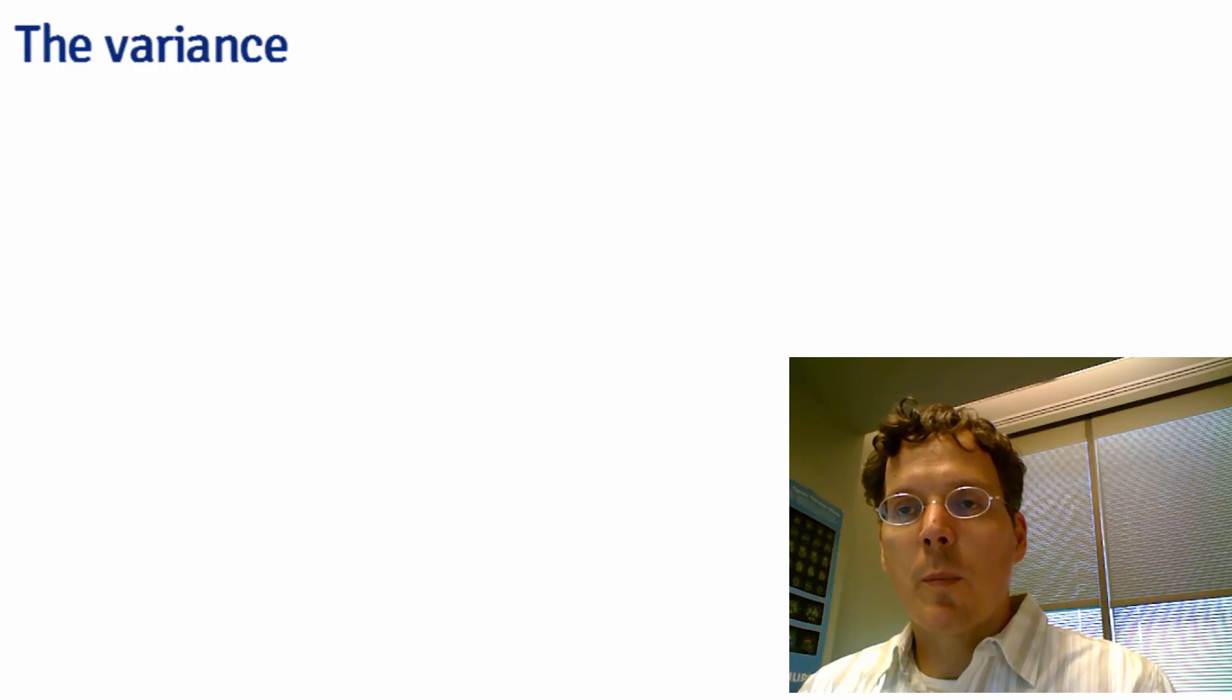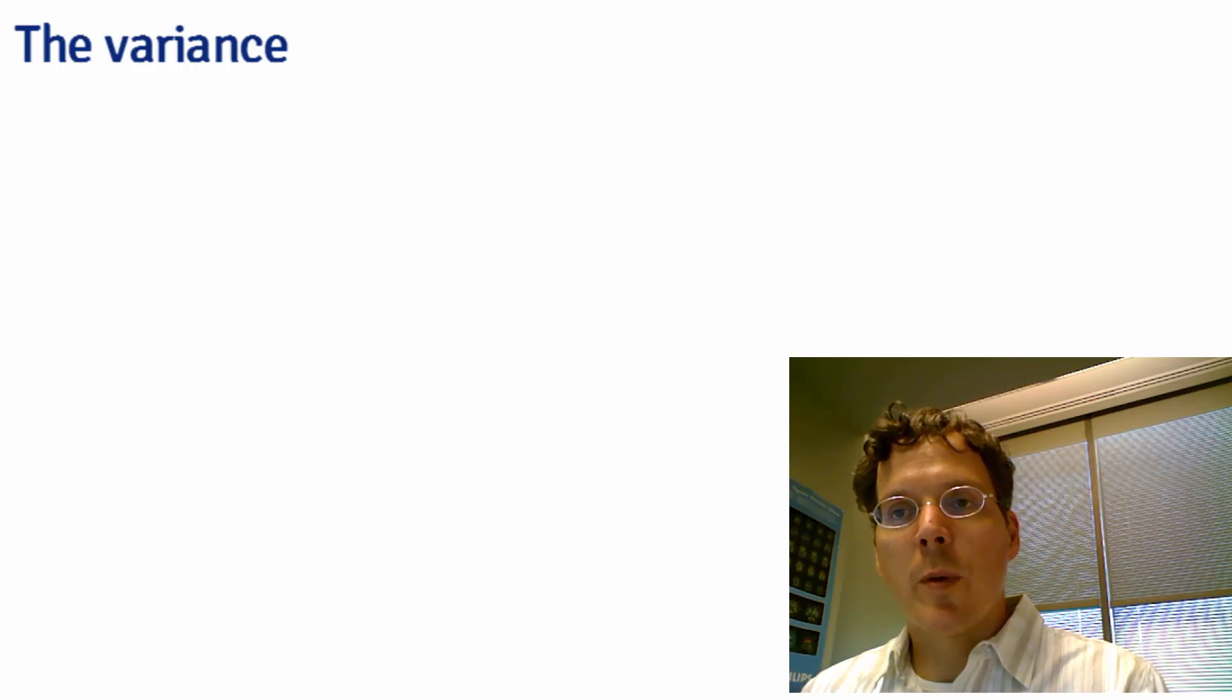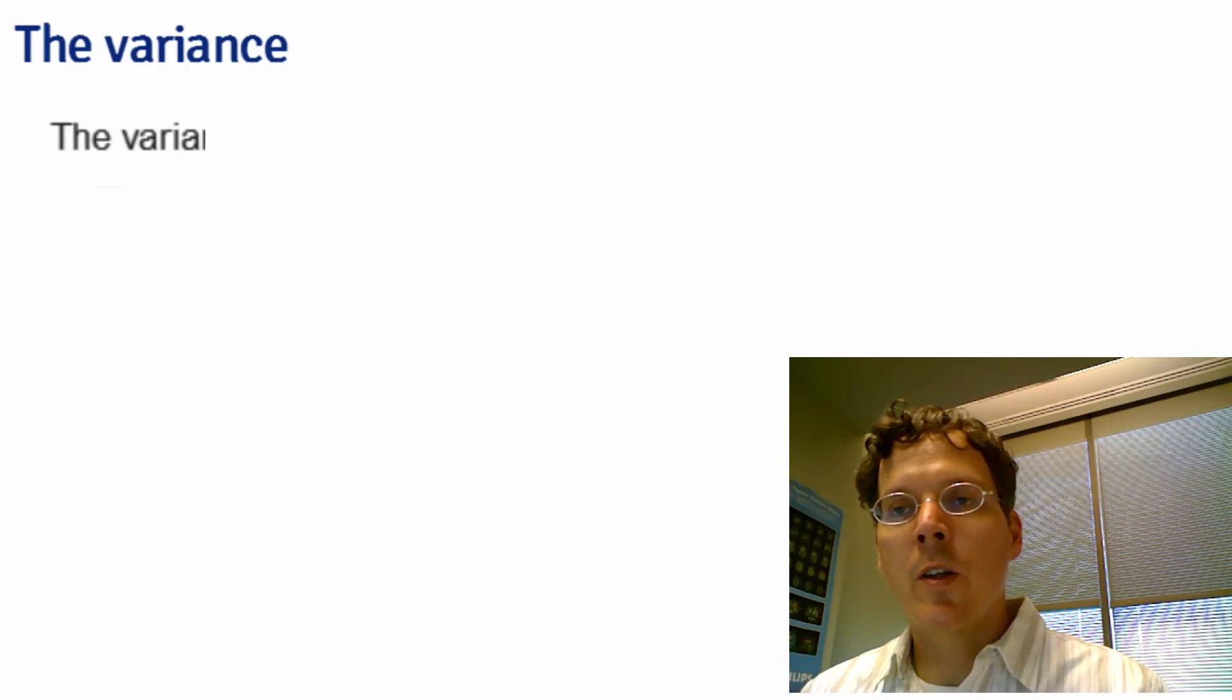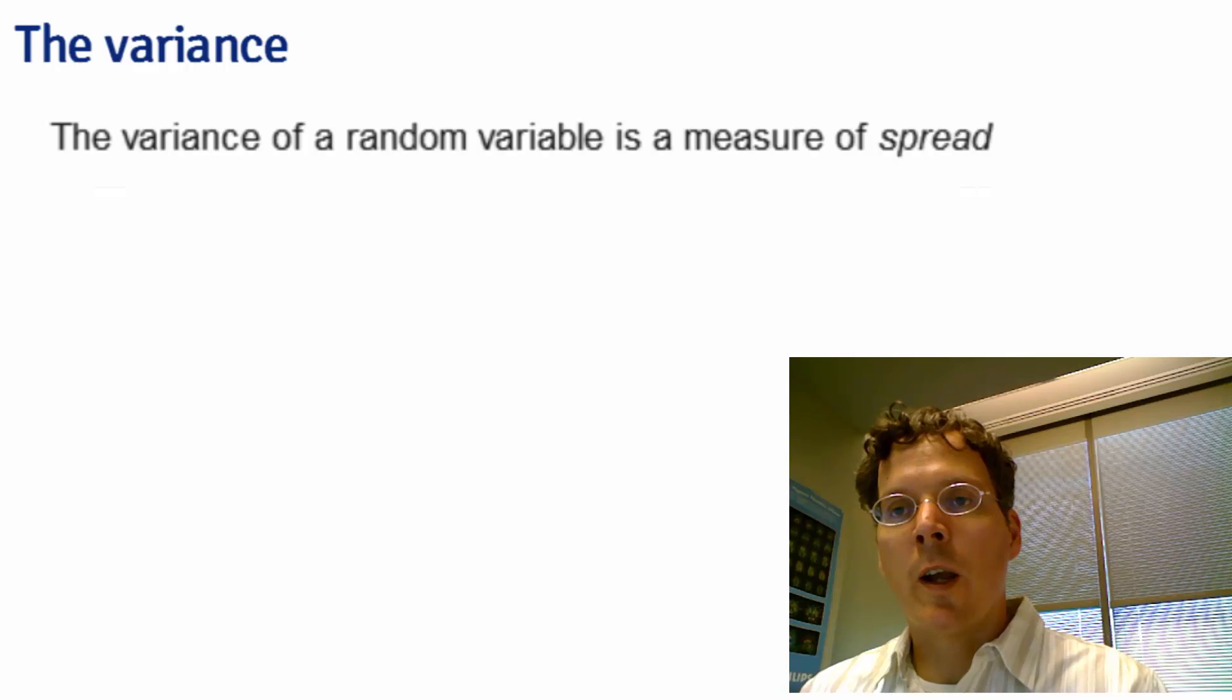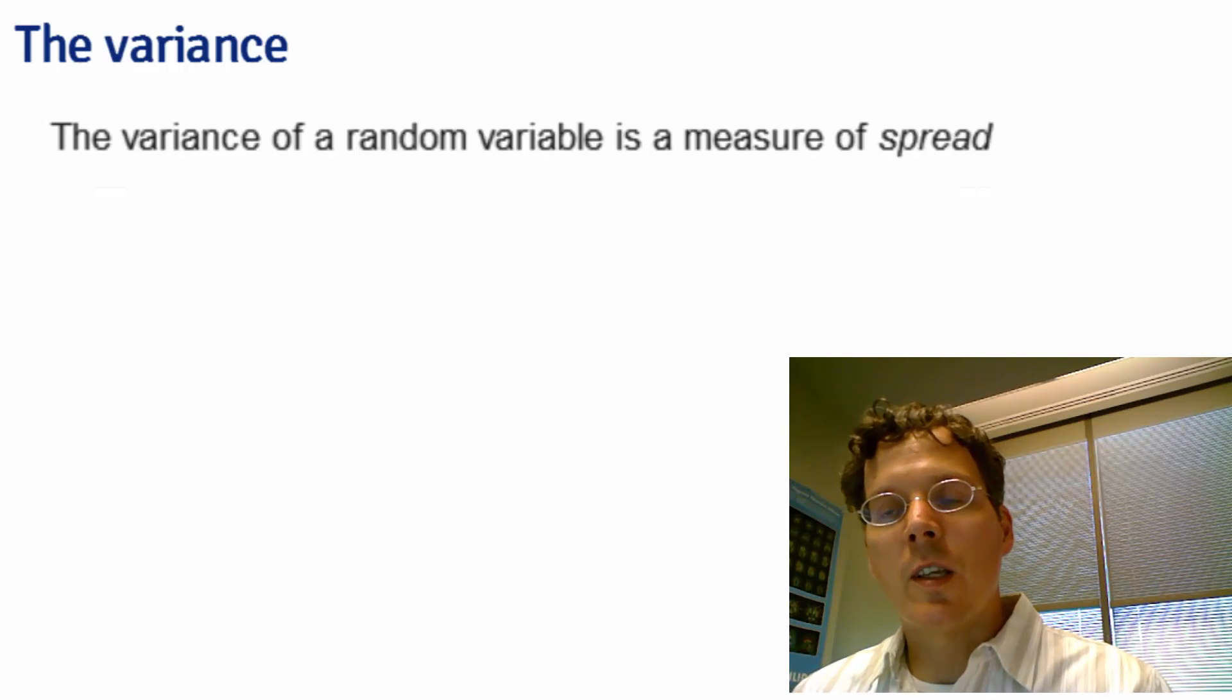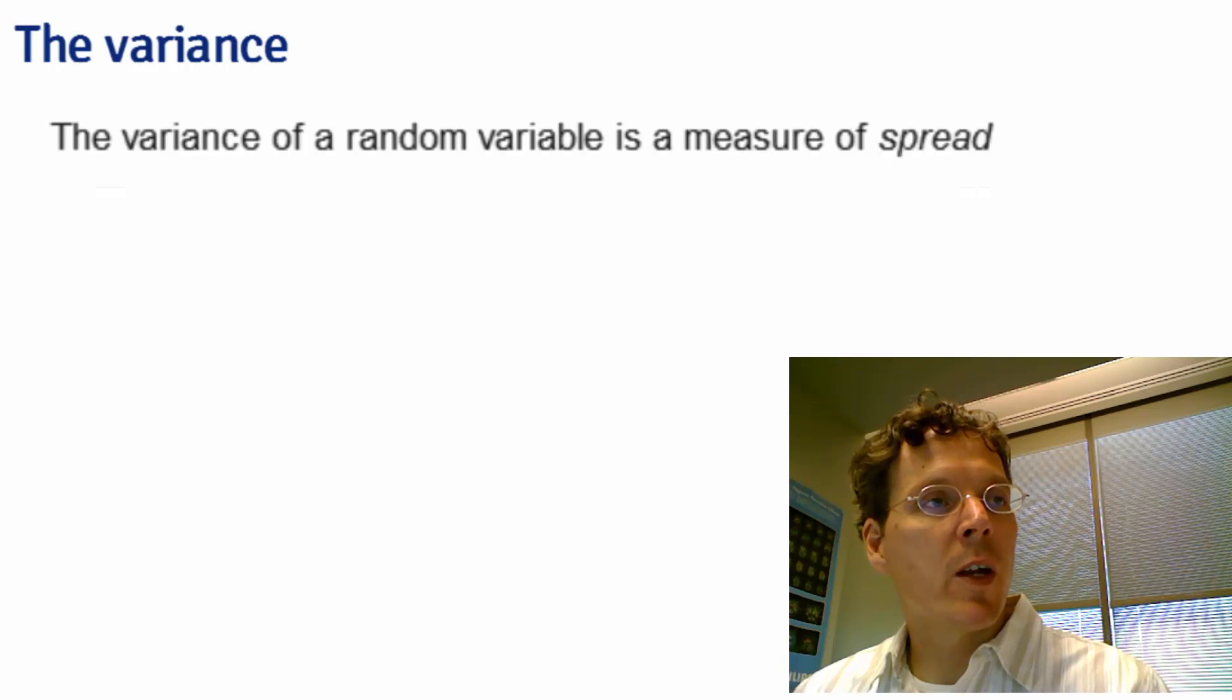In the last lecture we talked about the population mean, which talks about where the distribution is centered. If you think about a bell curve, that probability density function will move to the left or right as the mean changes. Another useful property is how spread out or concentrated the density is around the mean, and that's the variance.